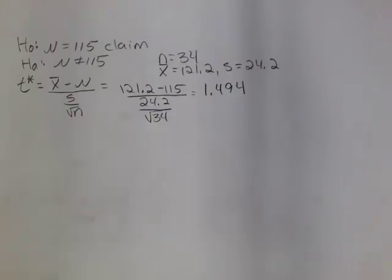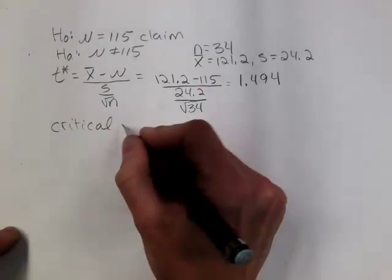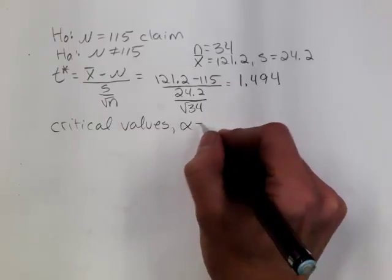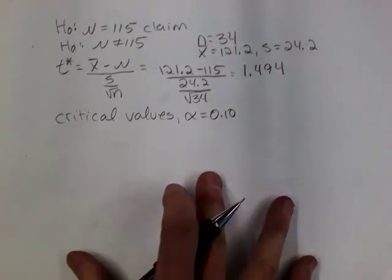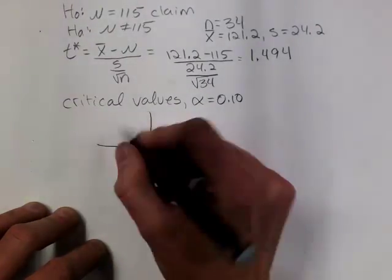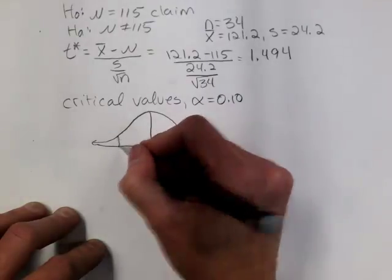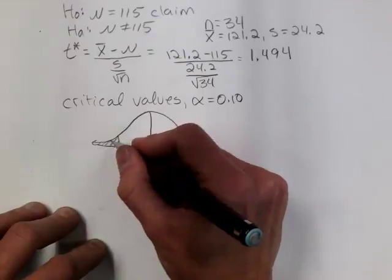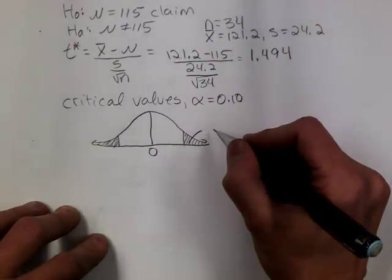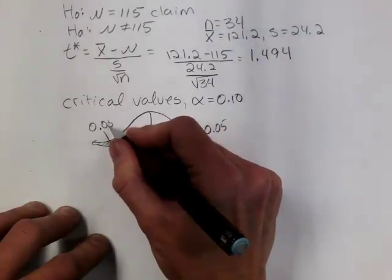So now we want to find the critical values. There's going to be two because this is a two-tailed test. So critical values. I need my level of significance, and what is that for this problem? 0.1, 0.10. So I'm going to draw something bell-shaped. Put zero in the middle, and shade my two areas of rejection. Now, because it's a two-tailed test, I need to divide alpha in two. So how much area is in one tail by itself? 0.05, right? So 0.05 in each tail.